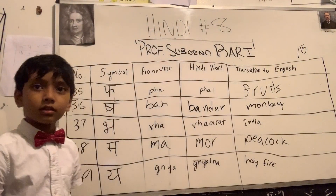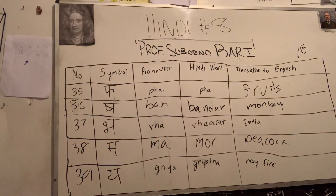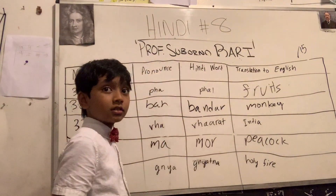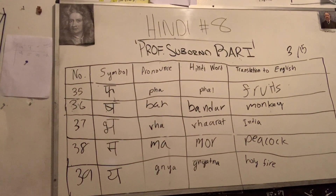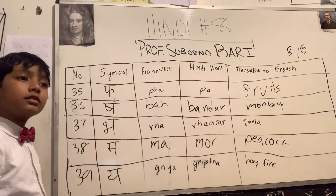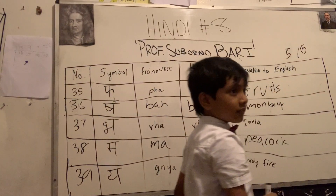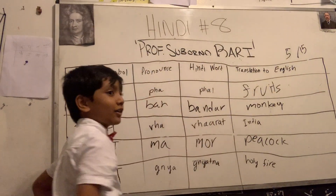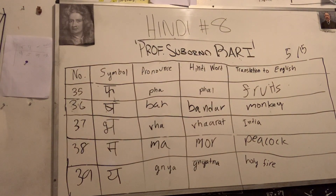The first one is 'Fa' — pronounce it, give the Hindi word, translation to English. That's three out of 15 things. Next is 'Ba' for 'Bandar,' which means monkey. It's 'Bandar,' not one. Next one is 'Ba' for 'Varot,' or India.